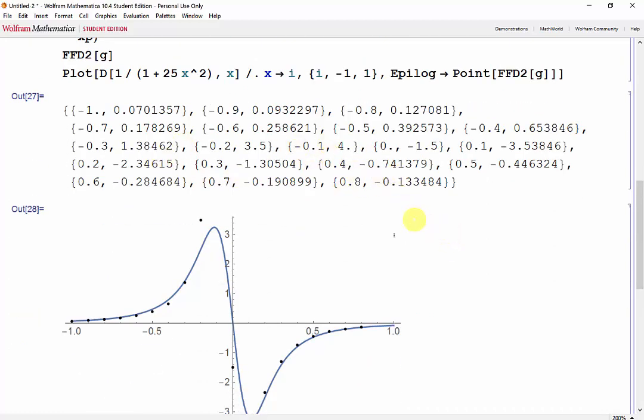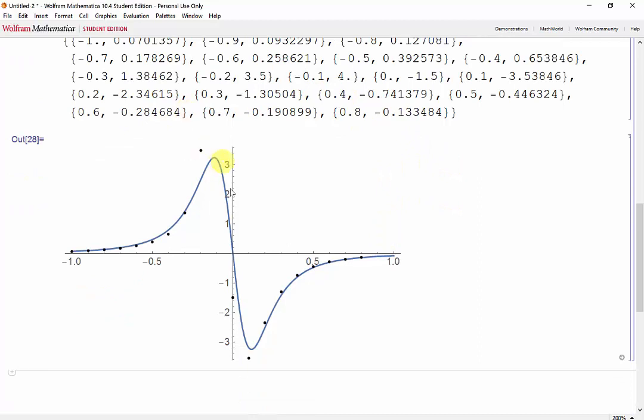Here are our data points. And this time we get a lot closer to our derivative, which is the blue line, aside from the points still being slightly shifted to the left. And this time, we're missing the last two data points.